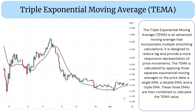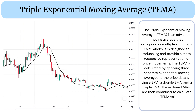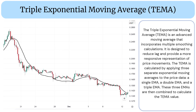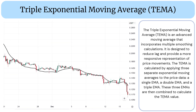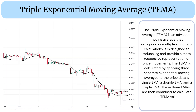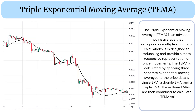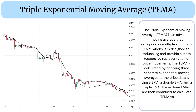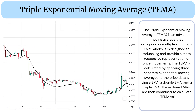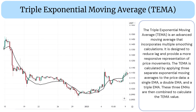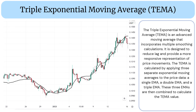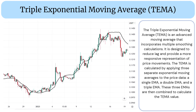The Triple Exponential Moving Average (TEMA) is an advanced moving average that incorporates multiple smoothing calculations. It is designed to reduce lag and provide a more responsive representation of price movements. The TEMA is calculated by applying three separate exponential moving averages to the price data: a single EMA, a double EMA, and a triple EMA. These three EMAs are then combined to calculate the TEMA value.